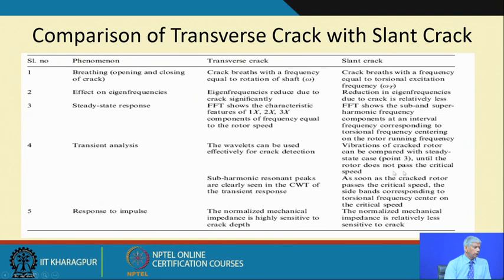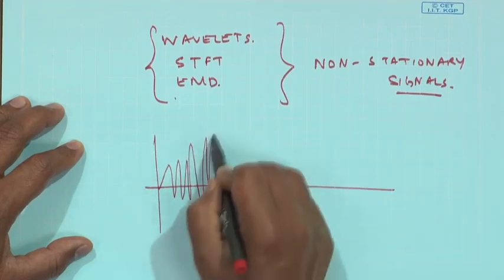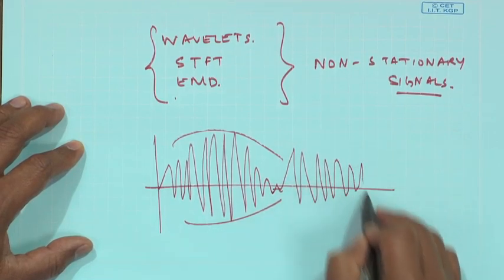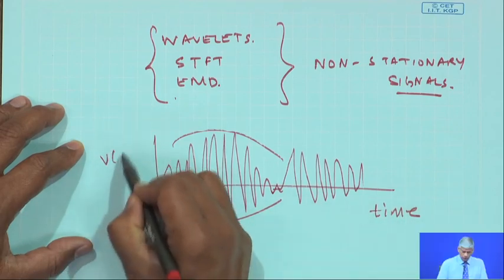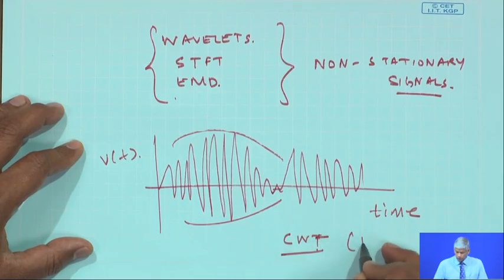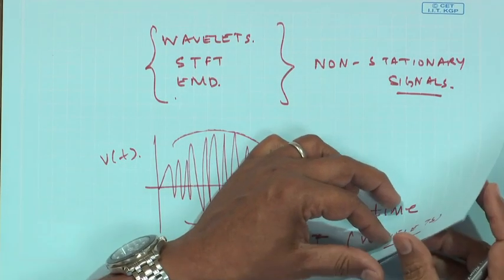The vibrations of a cracked rotor until the speed passes the critical speed will show sub-harmonics in the transient response. If the shaft has a crack there will be sub-harmonics in the time domain with an envelope, which can only be found using continuous wavelet transform. Those interested in studying more about cracks in rotating systems can refer to my papers available on Google Scholar or at my website.